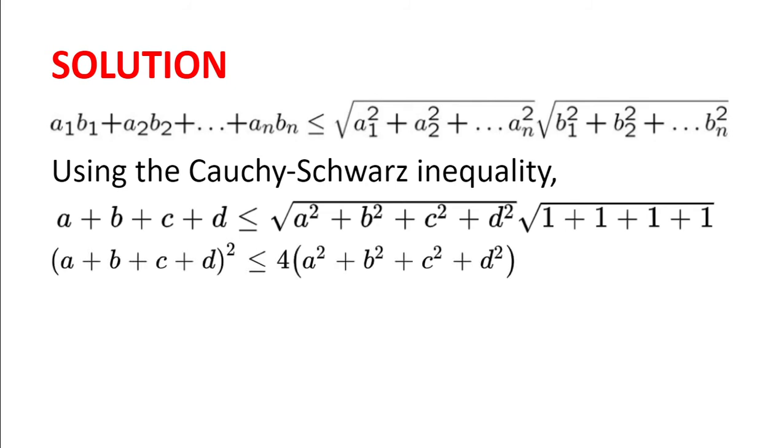Now we square both sides, and so we get on the left-hand side a plus b plus c plus d squared, and on the right-hand side we get the square root of 4 squared, so 4 multiplied by a squared plus b squared plus c squared plus d squared.